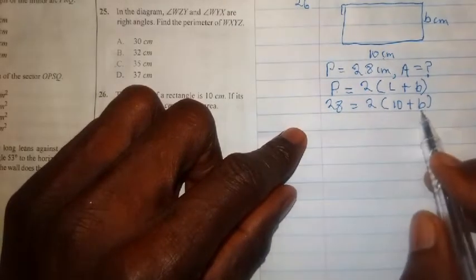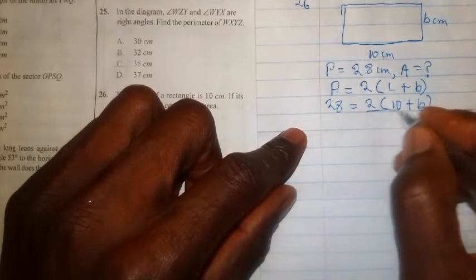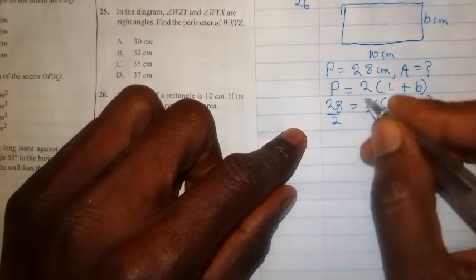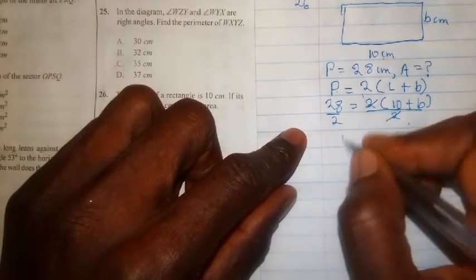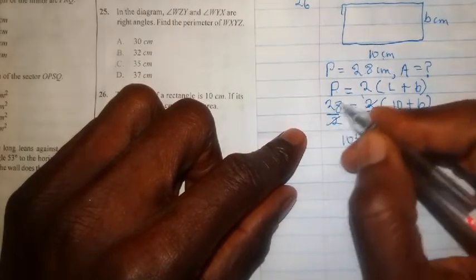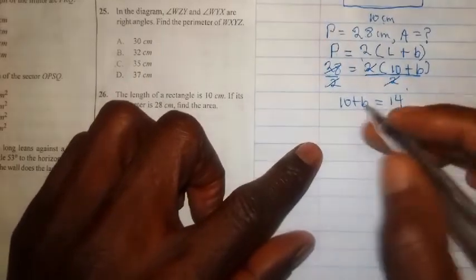From this formula we can calculate the breadth by collecting like terms. First, we divide both sides by 2. If we divide both sides by 2, these twos cancel out and we have 10 plus b equals... 28 divided by 2 is 14.